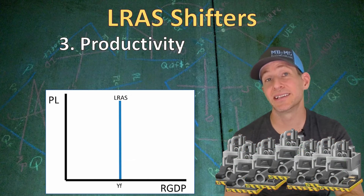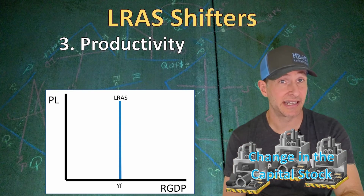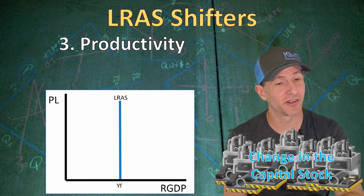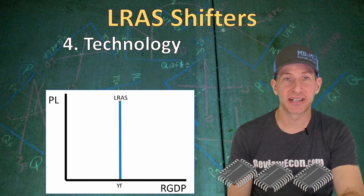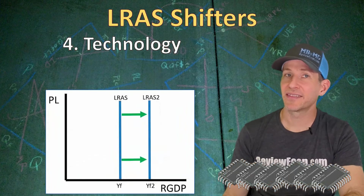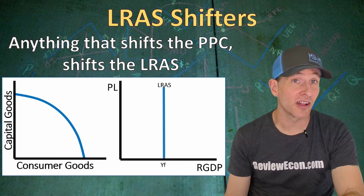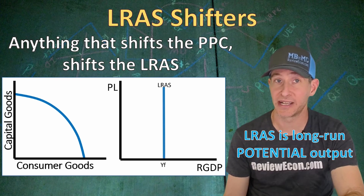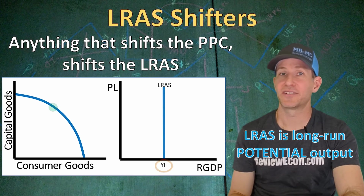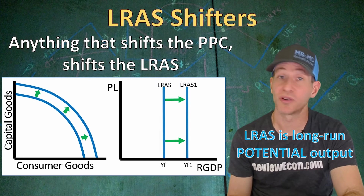Our third long run aggregate supply curve shifter is productivity. Changes in the physical capital stock impact productivity. A decrease in the physical capital stock shifts our long run aggregate supply curve to the left; an increase shifts it to the right. Changes in technology that increase the ability to produce also shift our long run aggregate supply curve to the right, increasing our long run potential real GDP output. The long run aggregate supply curve shifts because of any change that would also shift the production possibilities curve, since both show the long run potential real GDP output. An outward shift of the production possibilities curve means the long run aggregate supply curve has shifted to the right.